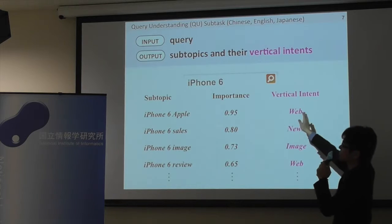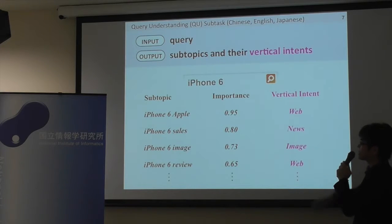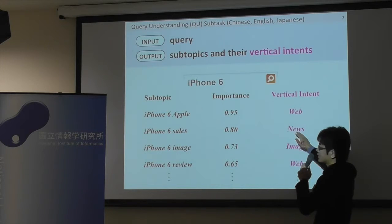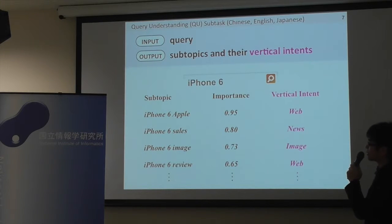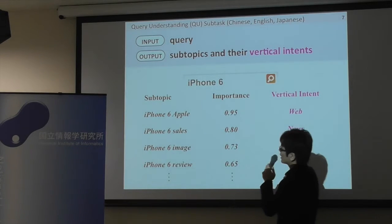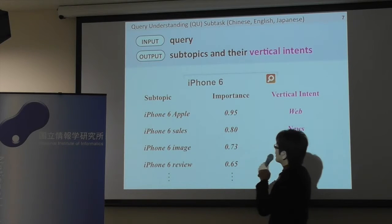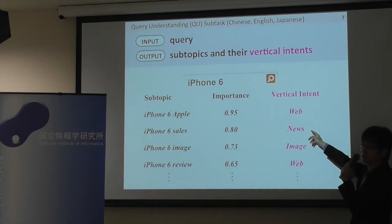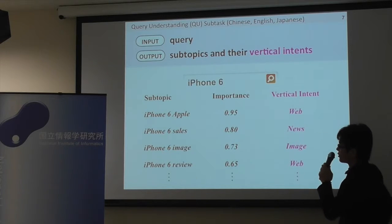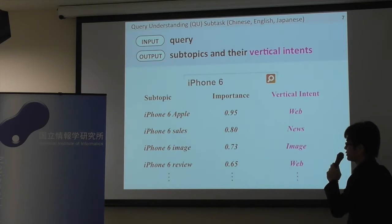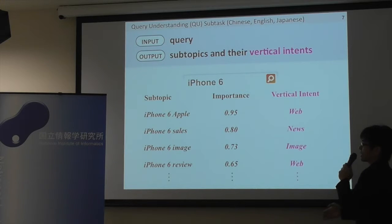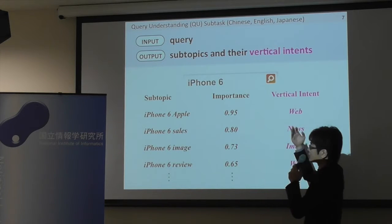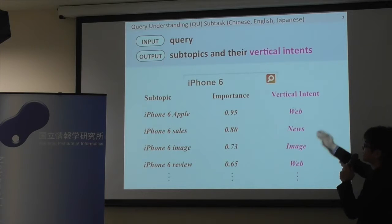In this sub-task, the system is required to identify the relevant verticals for each sub-topic. For example, for the sub-topic 'iPhone 6 sales', the user may want to check the news search results rather than web search results. The challenge is that the system has to identify both the important sub-topics and the relevant vertical intent.